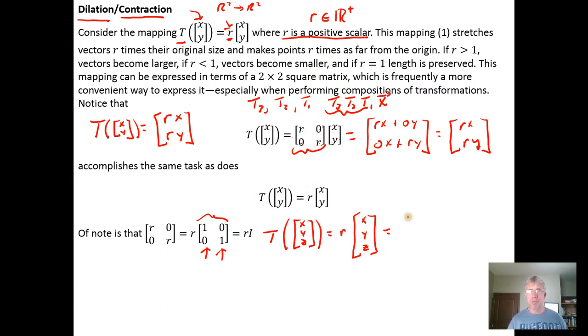We could also represent that analogously to how we did it in R2. We can multiply by a matrix that has R's on the diagonal: X, Y, Z. So if we just had R, 0, 0, 0, R, 0, 0, 0, R, this would be a contraction or dilation by a factor R to a vector in R3.